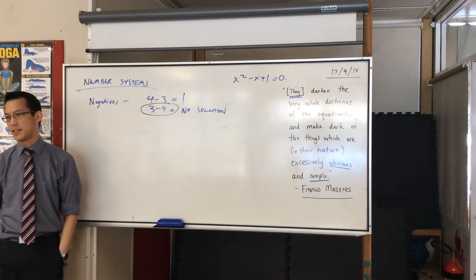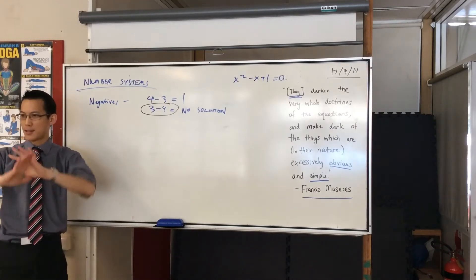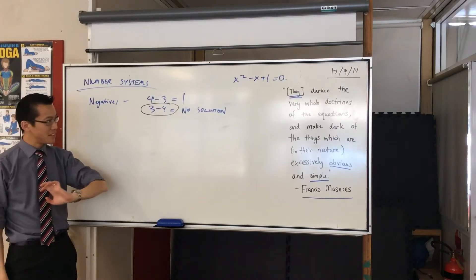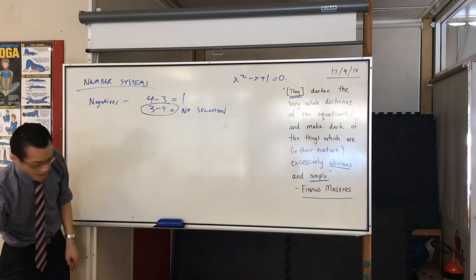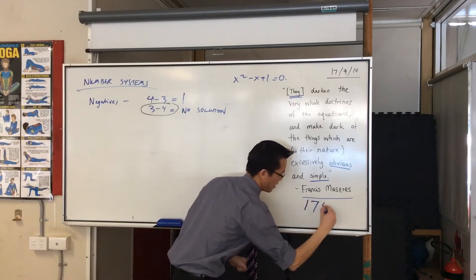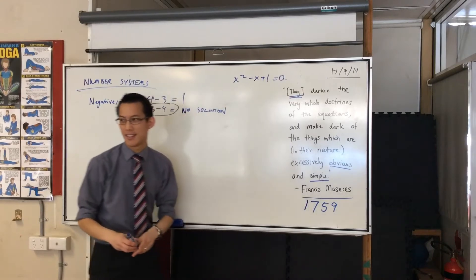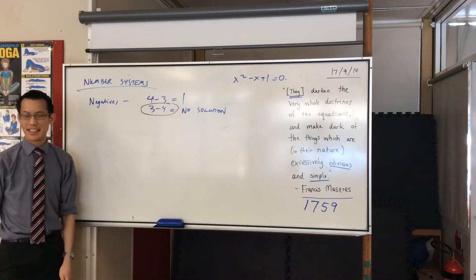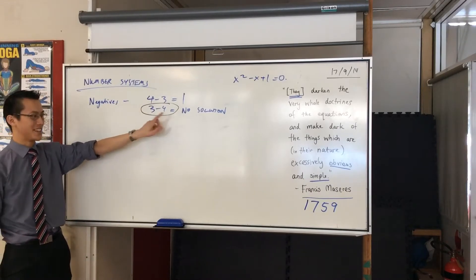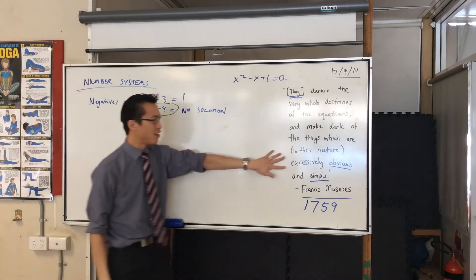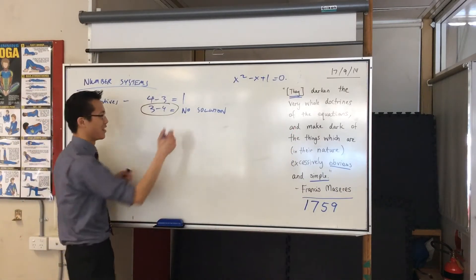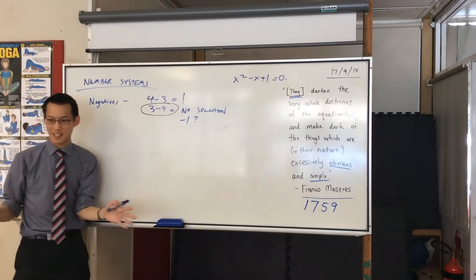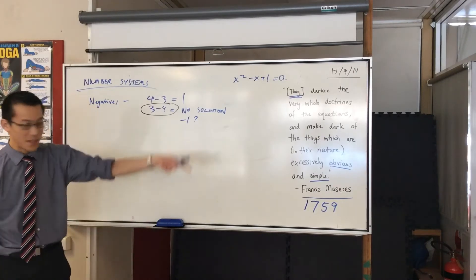How long did it take for this idea to be accepted? It's a bit tricky because depending on what part of the world you were in, there were different times. But there's a quote we looked at at the beginning of the lesson, written in 1759 about negative numbers. They said: these negative things — it's obvious there's no solution to this, it's obvious and simple — and now you're making this dark and confusing. So negative numbers were considered absurd, at least in the West, until the 1700s.